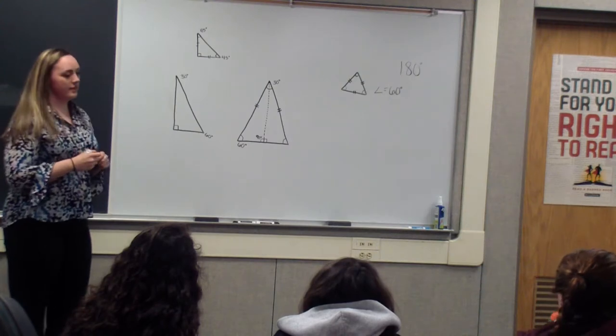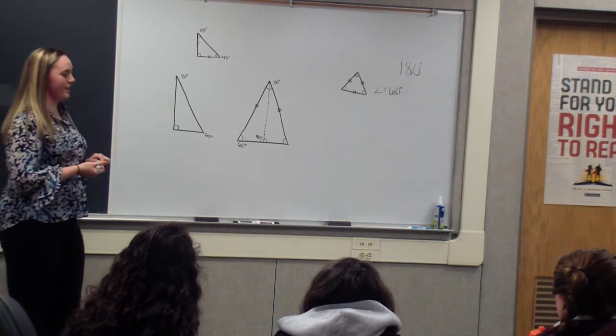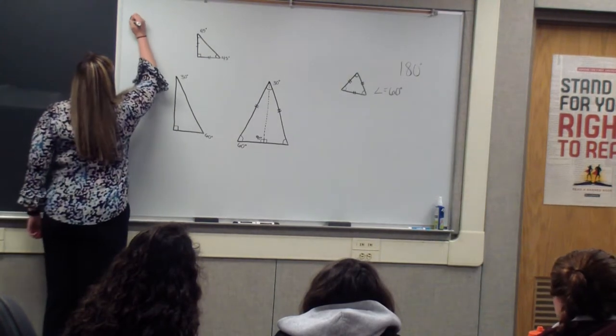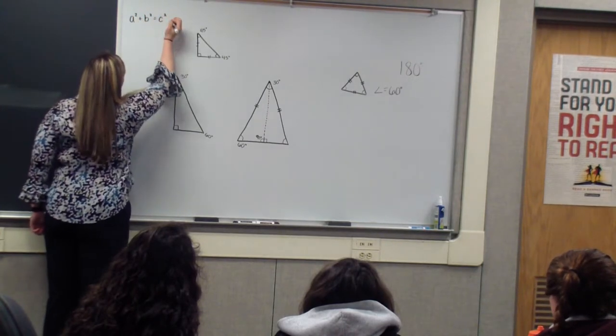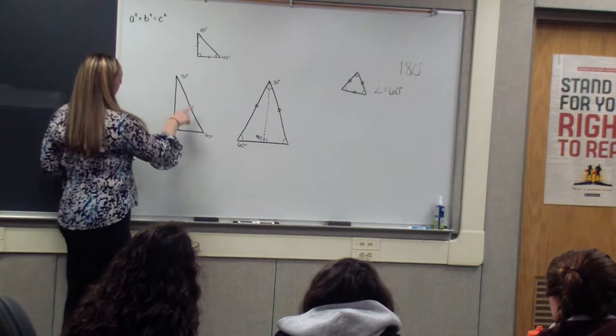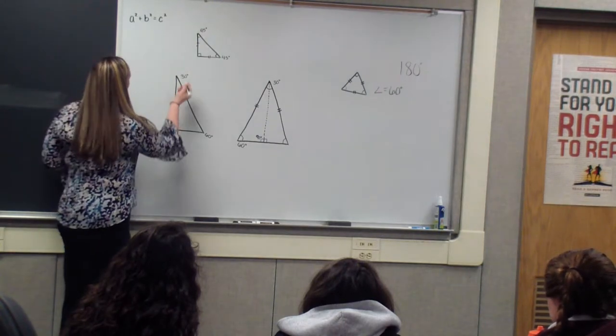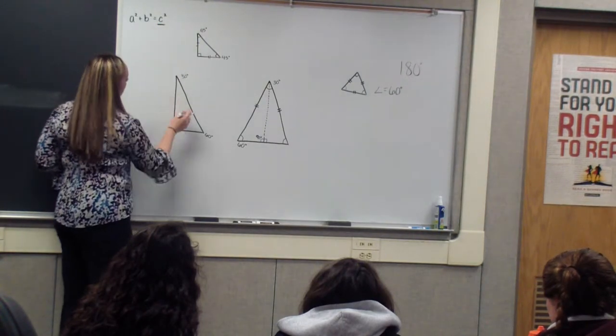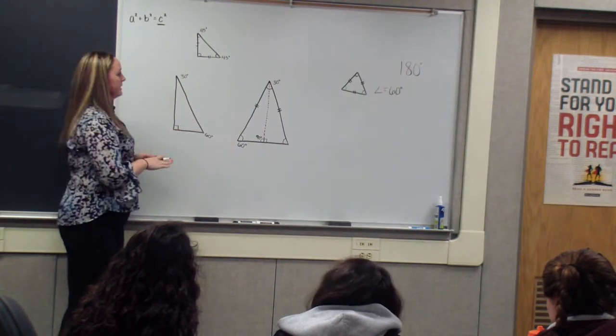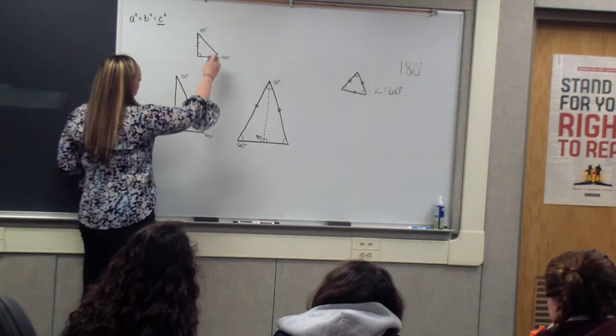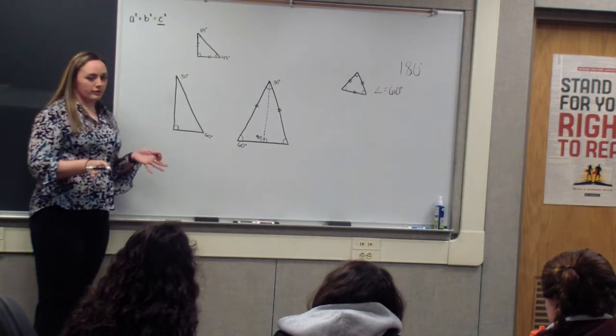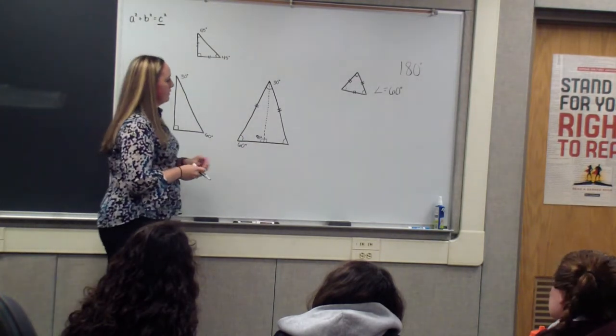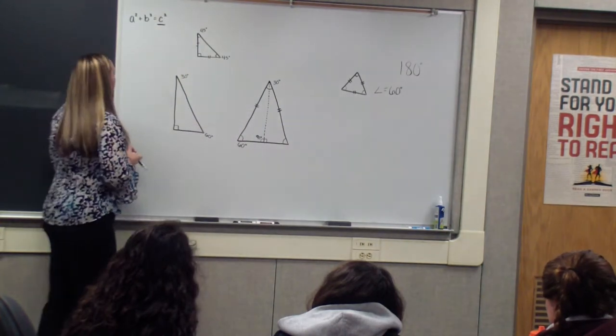So another unique thing for right triangles is called the Pythagorean theorem. So A squared plus B squared equals C squared. So if we take this triangle right here, our hypotenuse, which is the longest side of any triangle, is always going to be C. So this is the hypotenuse, this one, and this one. So this only works for right triangles, so you couldn't use it for an equilateral triangle because all three sides are the same length.